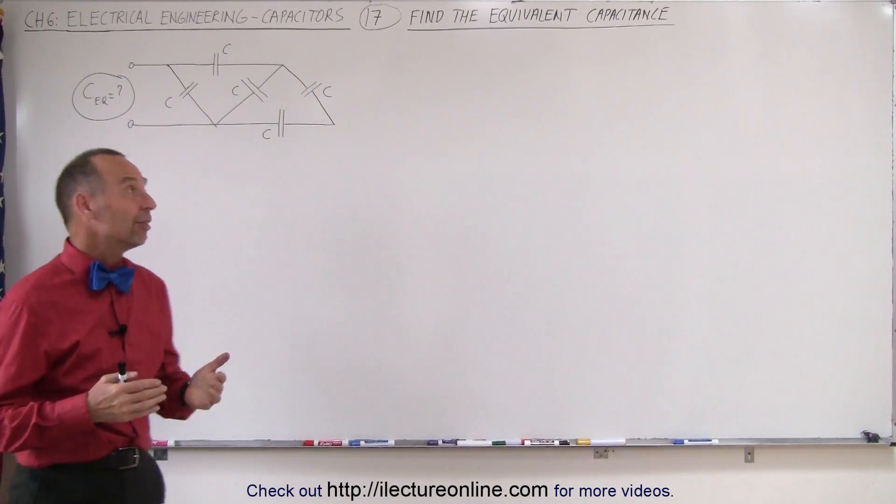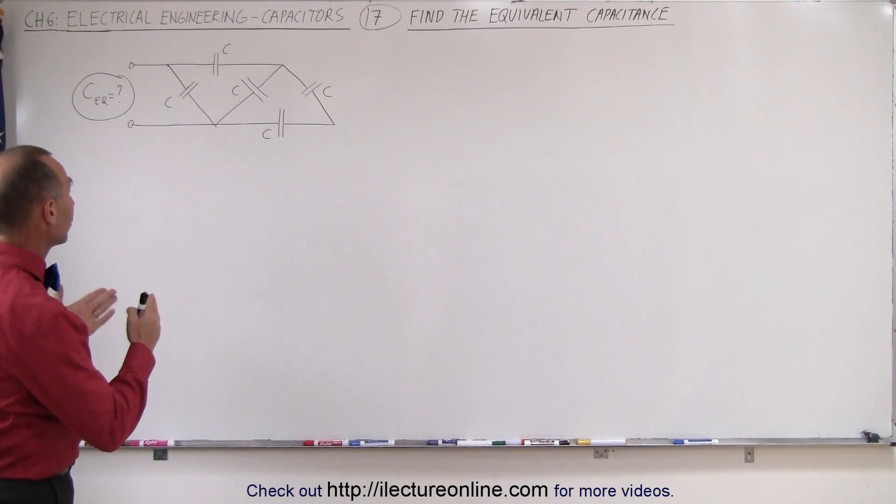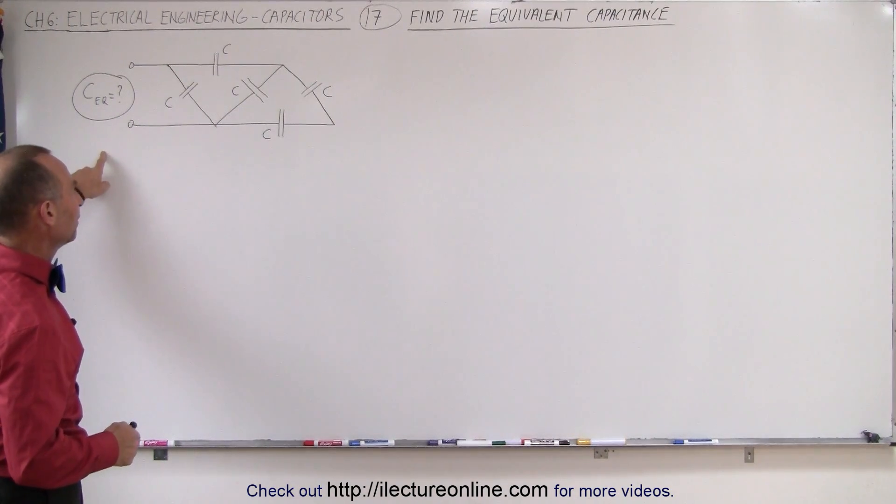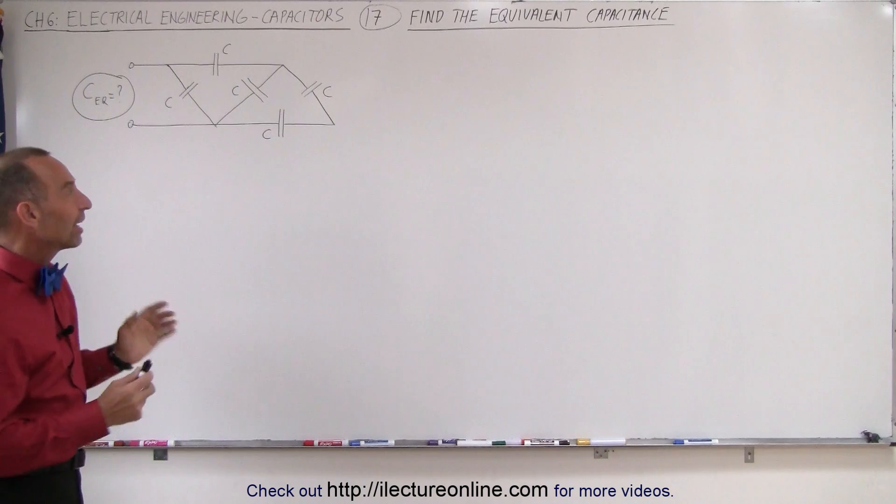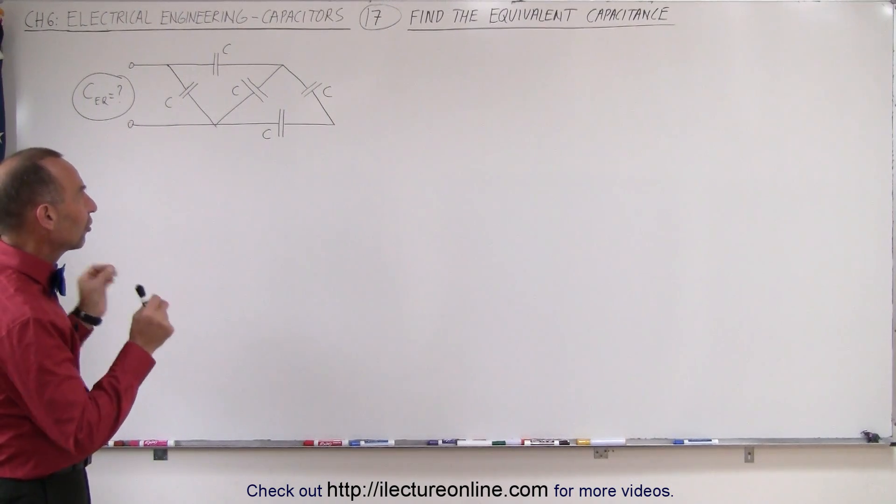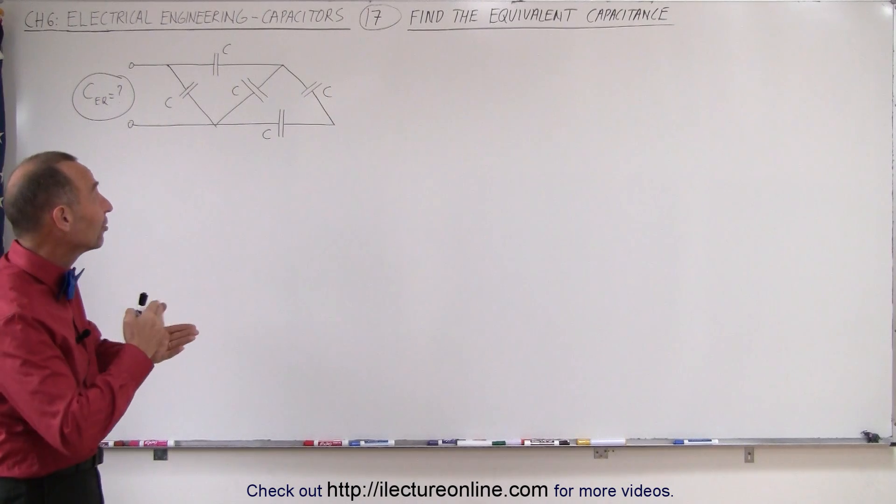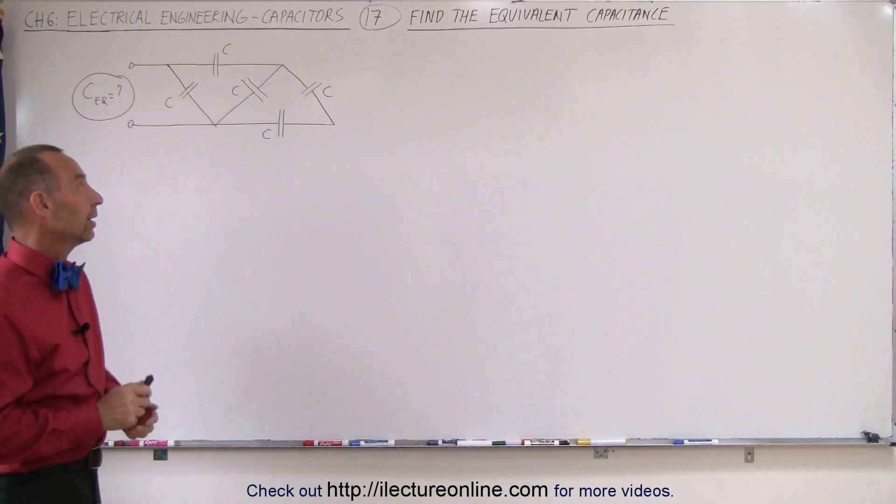Welcome to ElectronLine. In this video, we're going to solve the circuit. In other words, we're going to find the equivalent or total capacitance of the circuit. The best way to approach that is to try to redraw the circuit in such a way that you can easily identify which are the capacitors that are in series and which are the capacitors that are in parallel.